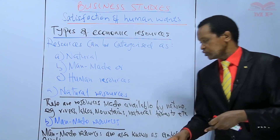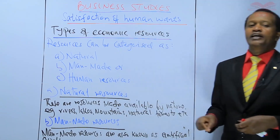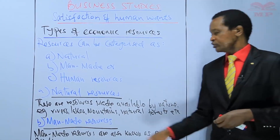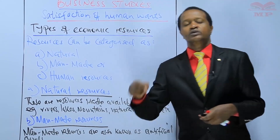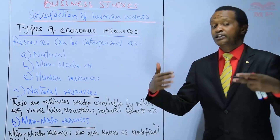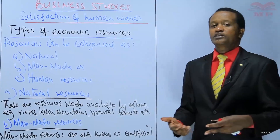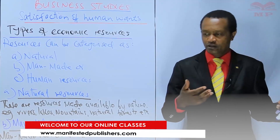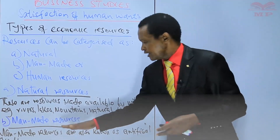Man-made goods can be categorized into two: consumer goods and capital goods. Consumer goods, such as food, clothes, television, and tables, are consumed directly. Capital goods, such as machinery, tools, and commercial vehicles, are used to produce other goods. So these are man-made goods.